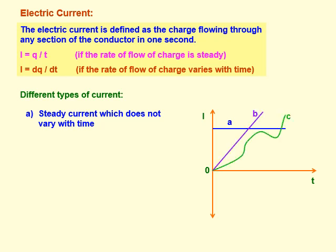The b graph and c graph represent varying current whose magnitude varies with time. So in b and c, the current changes with respect to time — it is called variable current or time varying current.